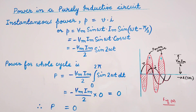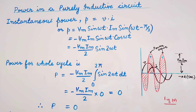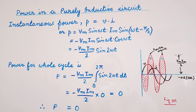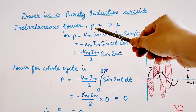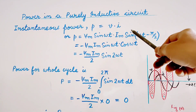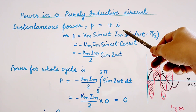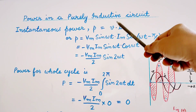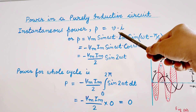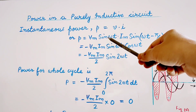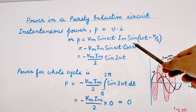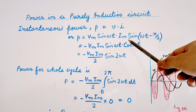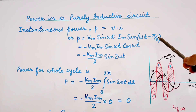We know that instantaneous power is the product of instantaneous voltage and instantaneous current. So instantaneous power P can be written as instantaneous voltage small v into instantaneous current small i. In case of a purely inductive circuit, the value of the instantaneous voltage is Vm sin(ωt) and the value of the instantaneous current comes out to be Im sin(ωt − π/2).